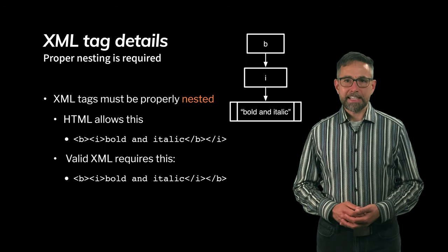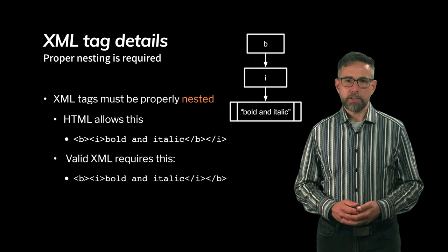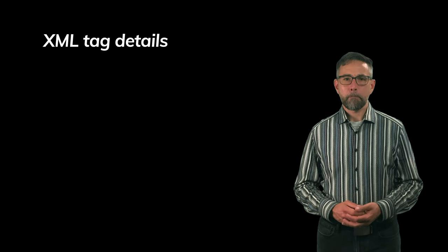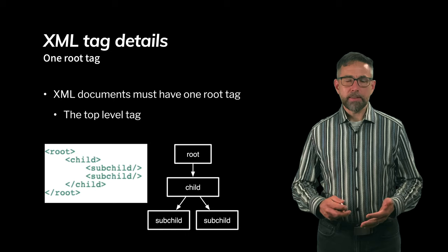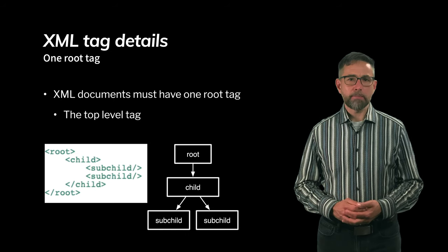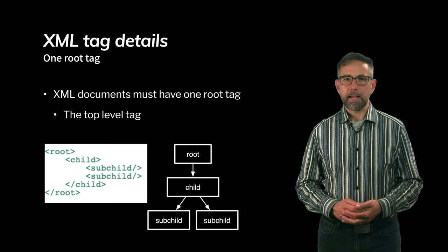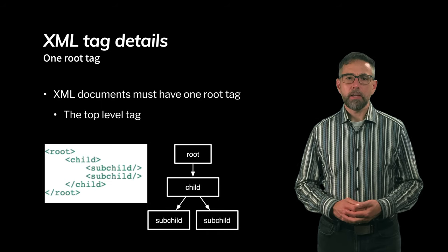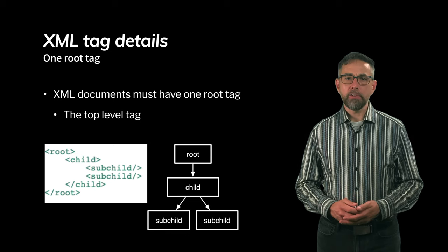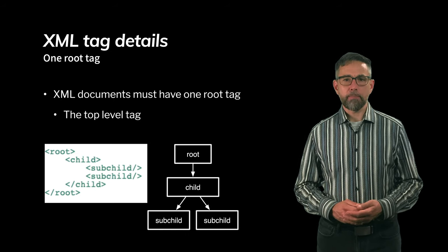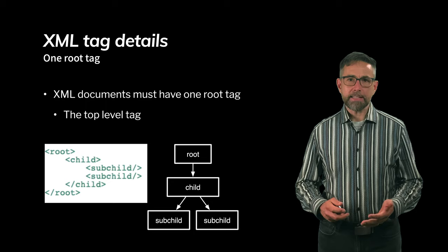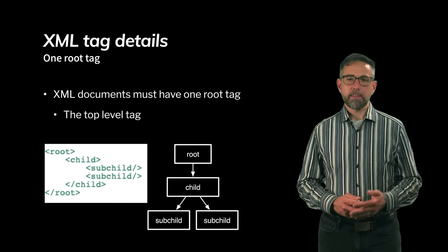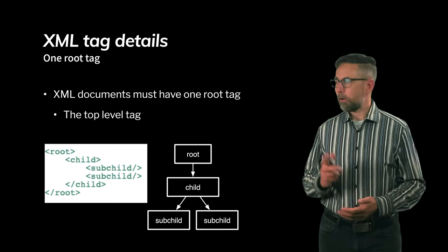XML documents must have one root tag — that's the top-level tag. In this chunk of XML I've called it 'root,' and that root tag has one child which has two sub-children. Properly nested XML is required to be able to parse and understand a tree structure.